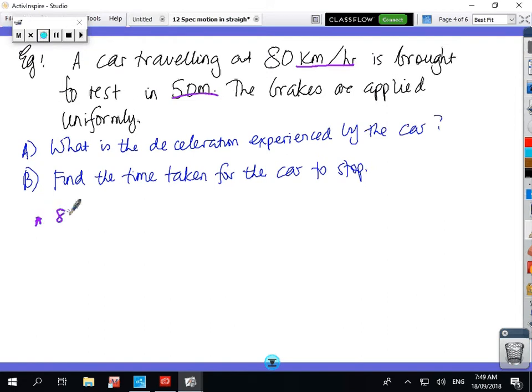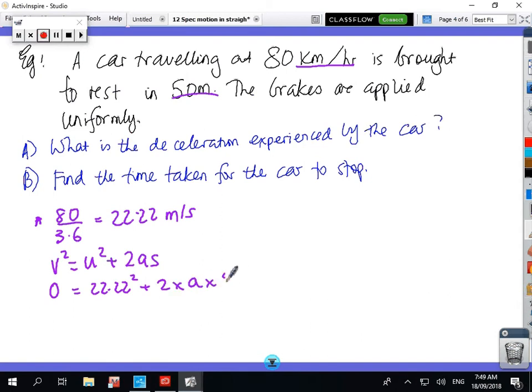So the first thing we need to do is 80 divided by 3.6 equals 22.22, so that's the speed in metres per second, and then we have V squared equals U squared plus 2AS. Okay, at the end it's 0, so 0 squared equals 22.22 squared plus 2 times A, and it took 50 metres to do that, and so when you solve the equation, you end up with minus 4.94 metres per second squared for the unit for acceleration.